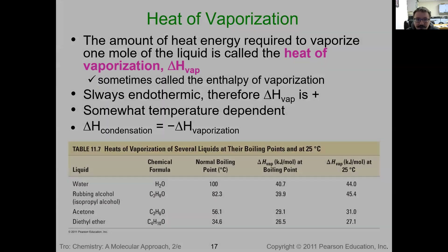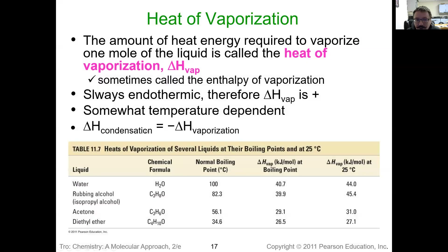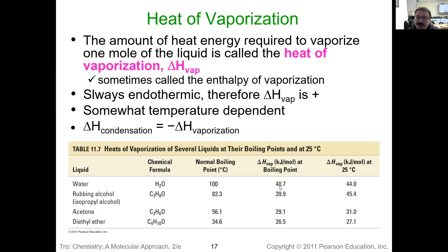Since condensation is the opposite of evaporation, and evaporation is endothermic, condensation is exothermic. Whatever the value is for vaporization, the condensation is the opposite — it takes 40.7 kilojoules to evaporate a mole of water, and it releases 40.7 kilojoules when we condense a mole of water.